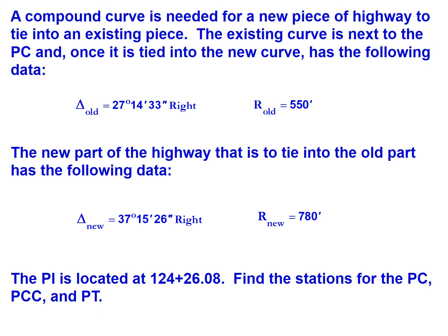The new part of the highway that's to tie into the old part has an intersecting angle of 37 degrees 15 minutes 26 seconds to the right and a radius of 780 feet.